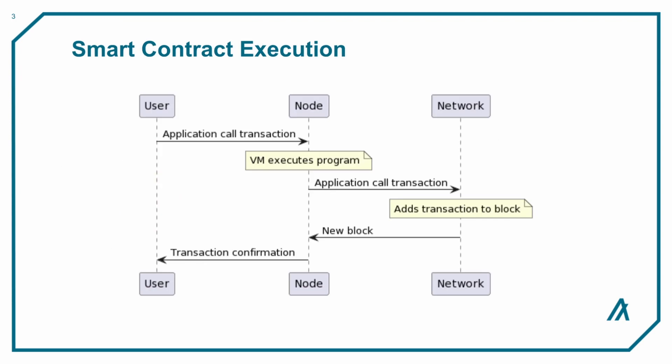For blockchains, virtual machines just refer to the portion of the software that performs the execution of smart contracts. On Ethereum, the execution environment is called the Ethereum Virtual Machine. On Algorand, this execution environment is called the Algorand Virtual Machine. Both the EVM and the AVM were written specifically for smart contracts, but they have a lot of fundamental differences and are not compatible.